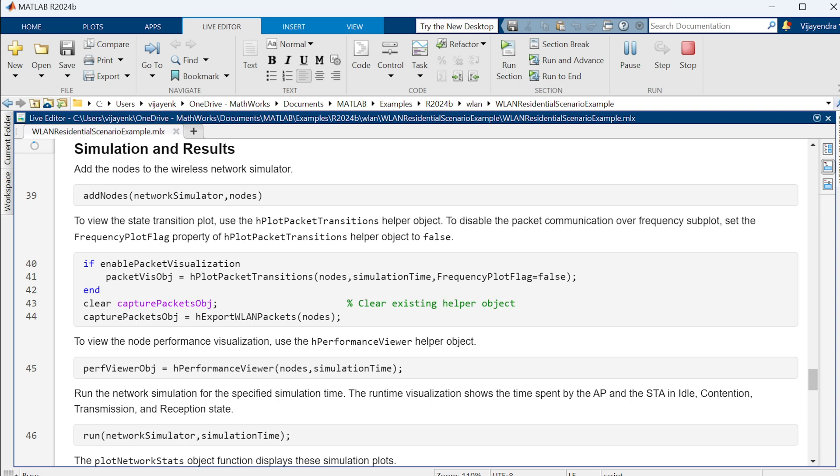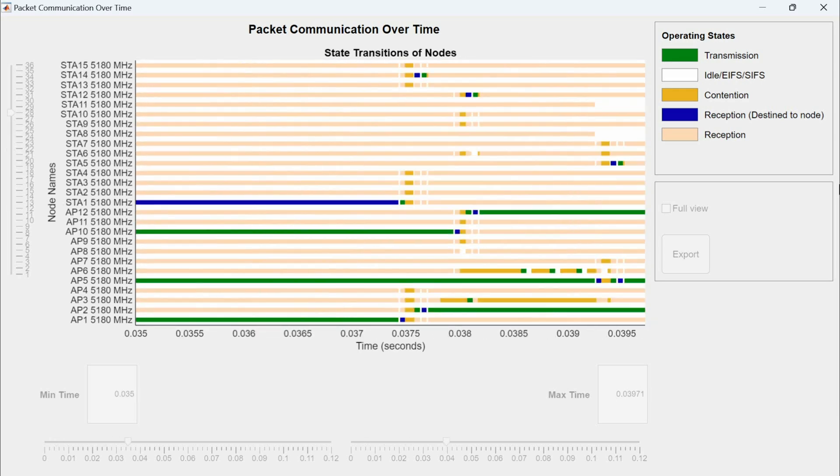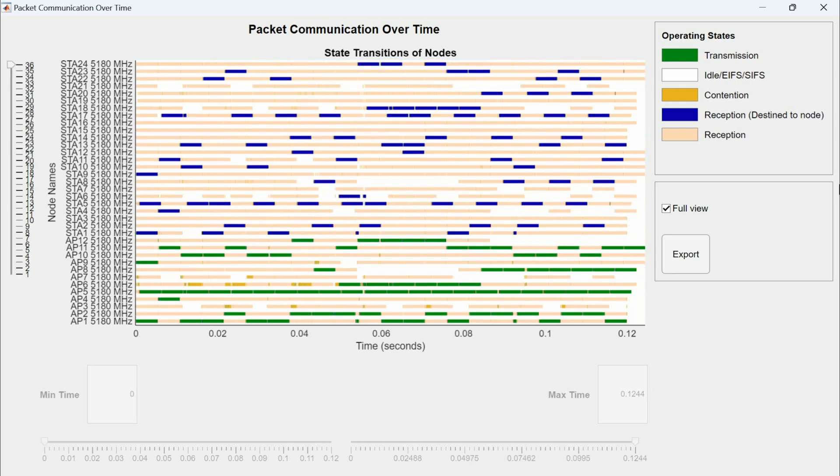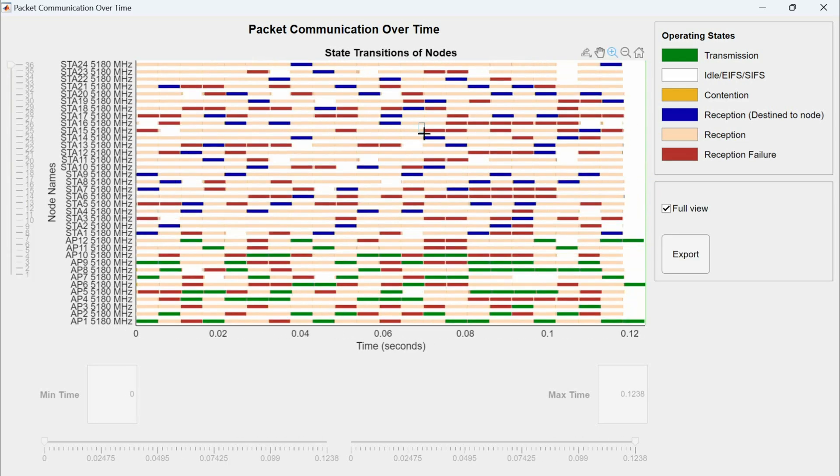To start, we run this block of code to visualize packet communication over time. This opens a new window that lets us observe the state transitions of the nodes. After the simulation, we can even zoom into specific time intervals and examine details more closely.